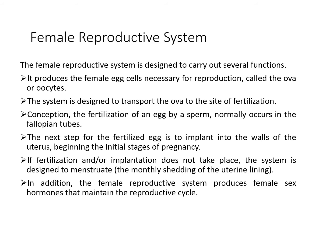If fertilization or implantation does not take place, the system is designed to menstruate — the monthly shedding of the uterine lining. And lastly, the female reproductive system produces female sex hormones that maintain the reproductive cycle.